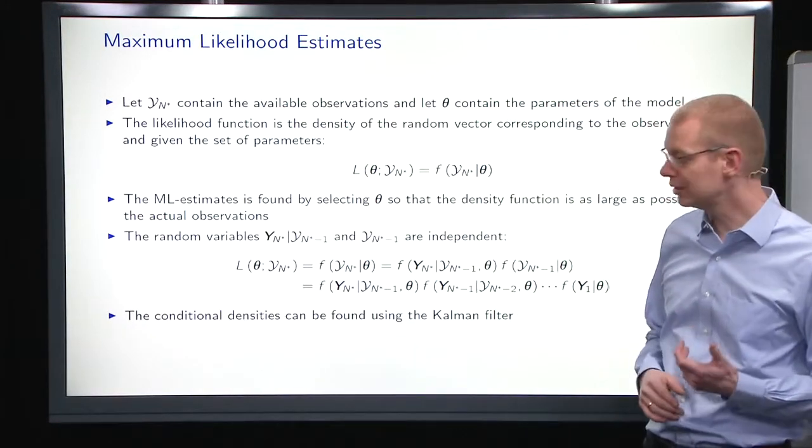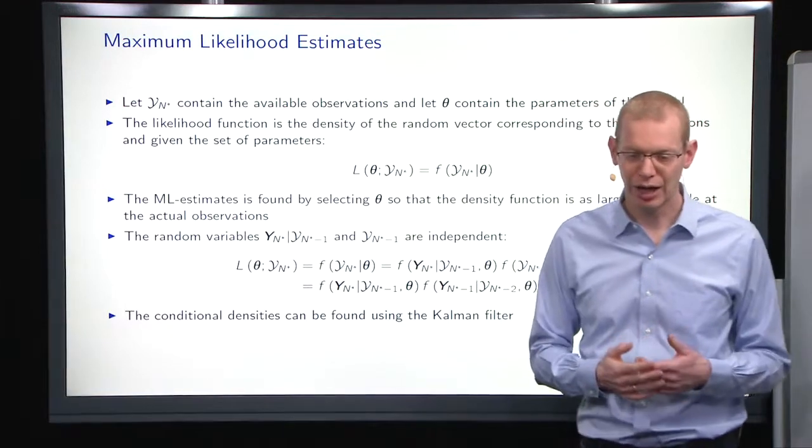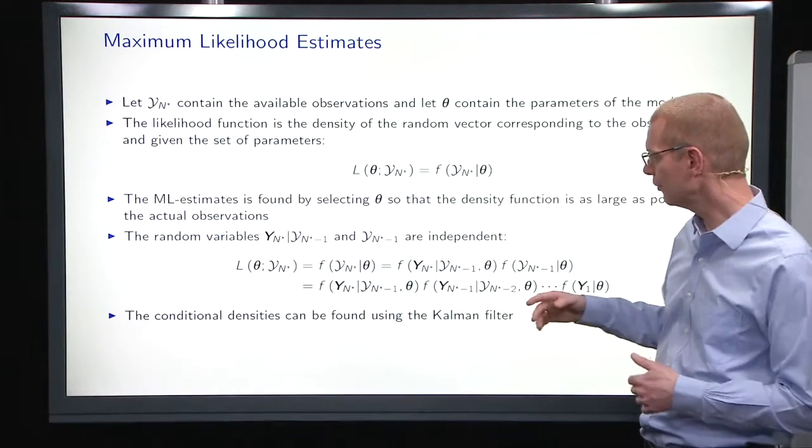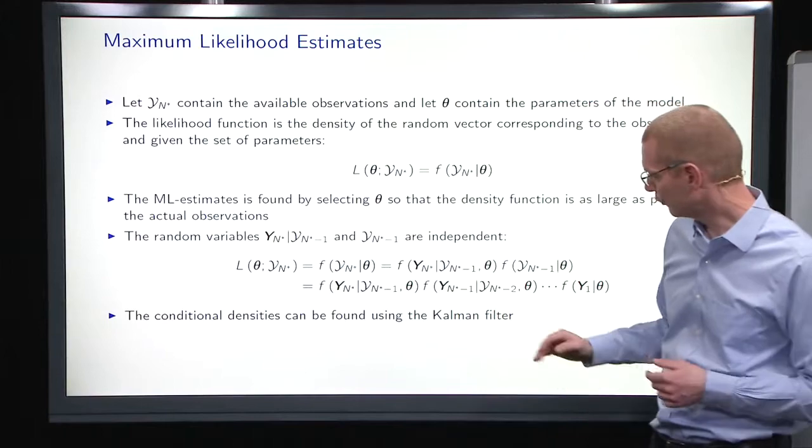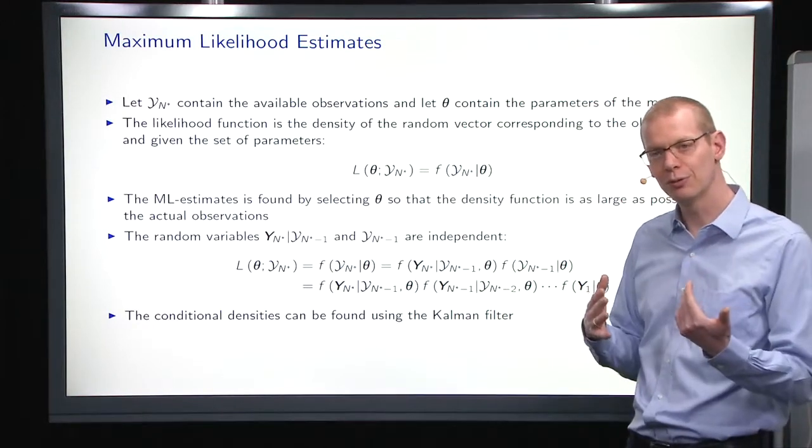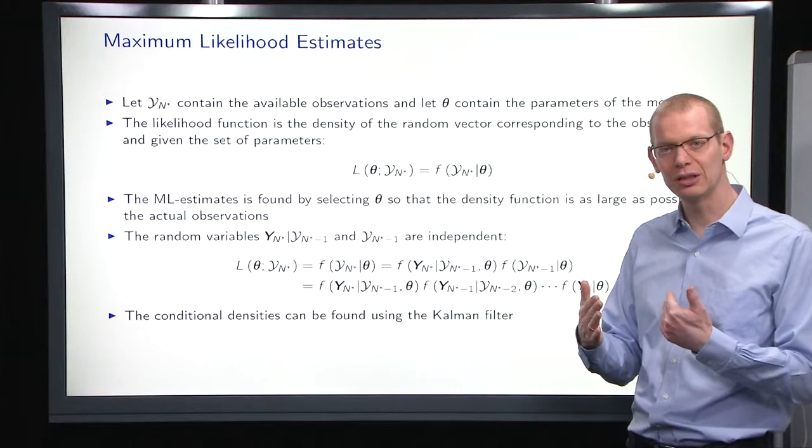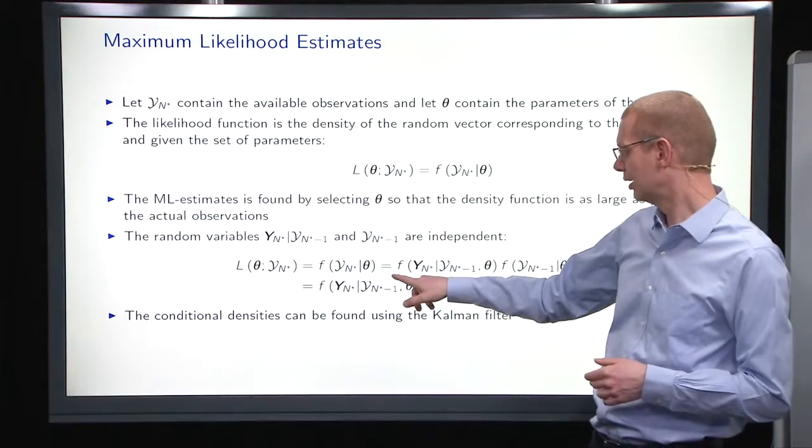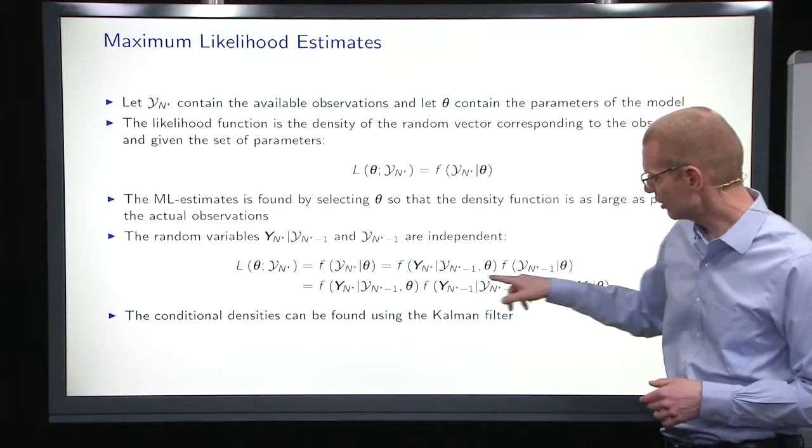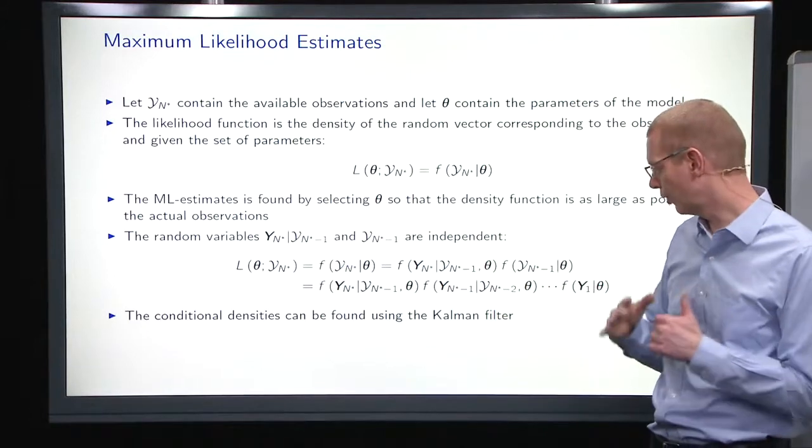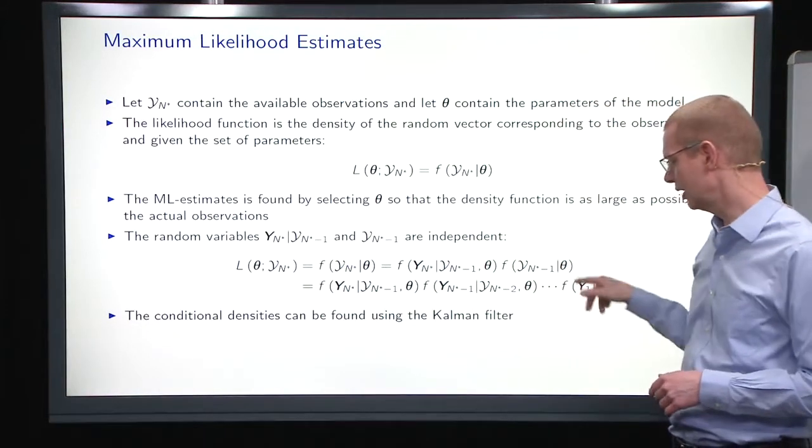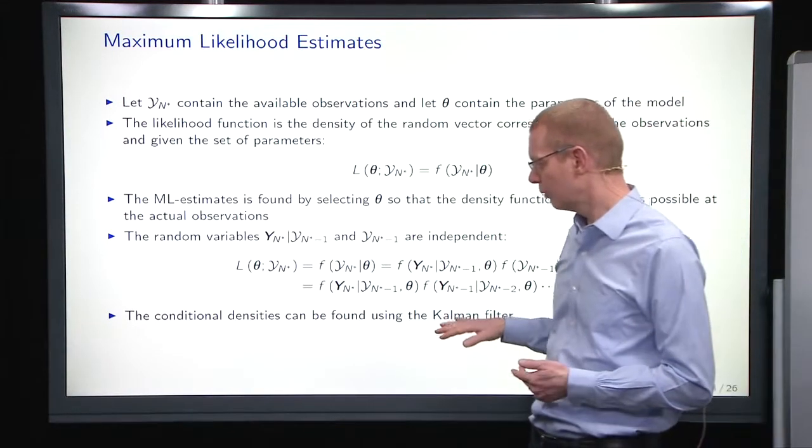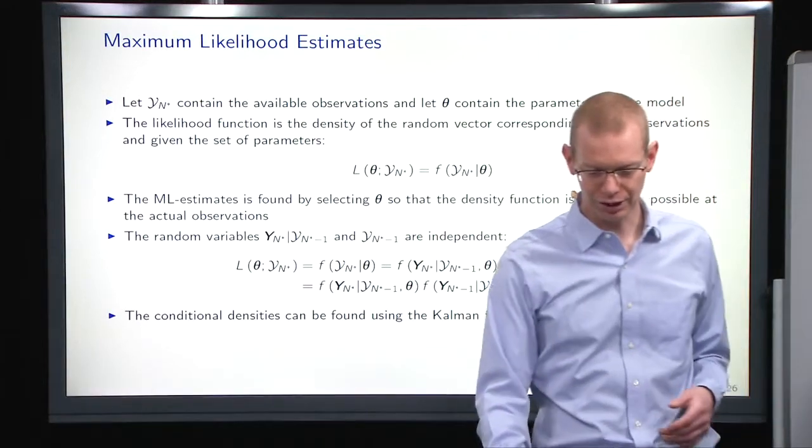What we do is that we pick a set of parameters and then we go through the filter, and thereby we can calculate the likelihood. When we look at the process from the filter, it's a Markov process. That means all information is contained in the current state in order to predict the future, which means that we can factor out the joint density to a product of all the one-step prediction errors, as we have here, the densities of those.